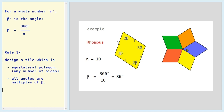And then you consider here: 360 degrees around this point. We have five of these smaller angles. The smaller angle is 2 beta, and 5 times 2 beta is 10 beta, which is 360 degrees. That gives you an idea of how you can put together these equilateral polygons.